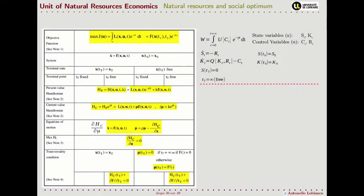Let's see how we can apply the method of optimal control theory to our natural resource depletion model. The table on the left gives us a method for solving optimal dynamic optimization problems in general — it is a very generic table that tells us how to solve not just our specific problem but a wide set of problems.